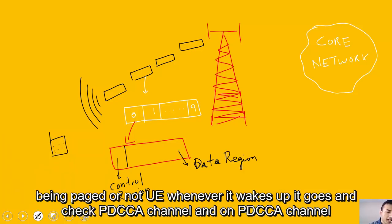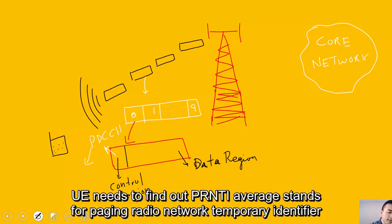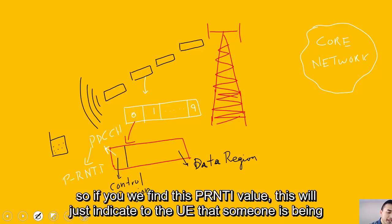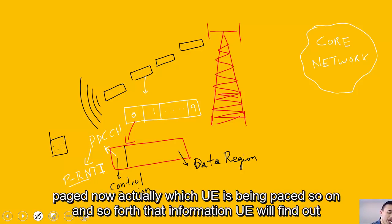How will UE know if it is being paged? UE, whenever it wakes up, goes and checks PDCCH channel, and on PDCCH channel, UE needs to find out P-RNTI, which stands for paging radio network temporary identifier. If UE finds this P-RNTI value, this will indicate to the UE that someone is being paged.